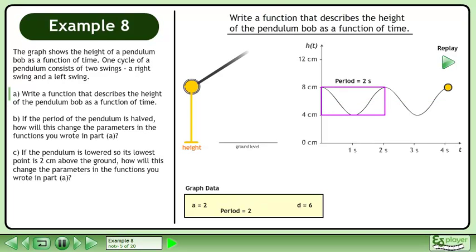The period is 2 seconds. Use the formula b equals 2π over p to get the b value. Plug in 2 seconds for the period. The b value is equivalent to π. The graph has no phase shift, so c equals 0.